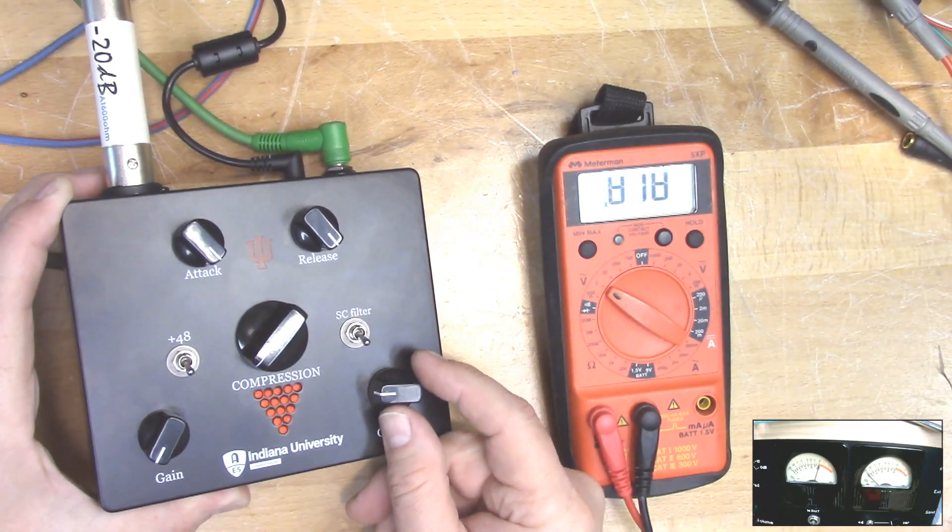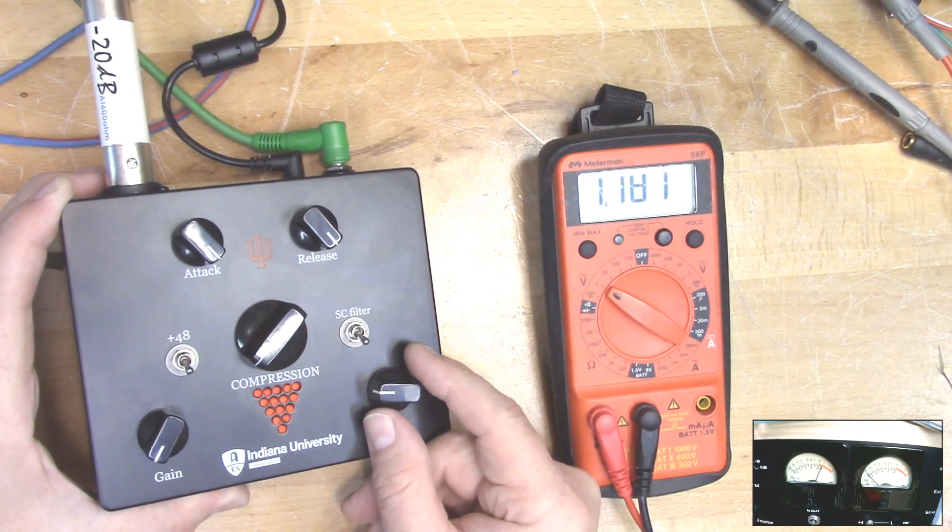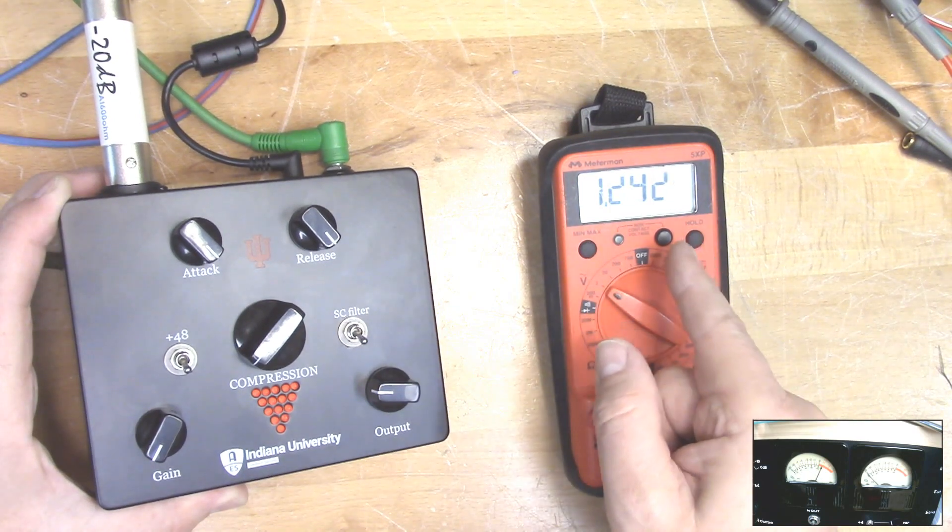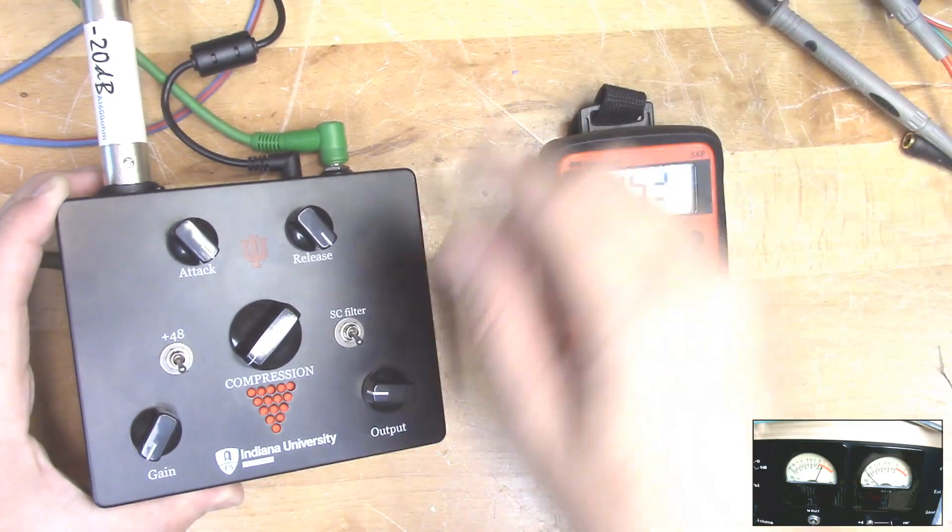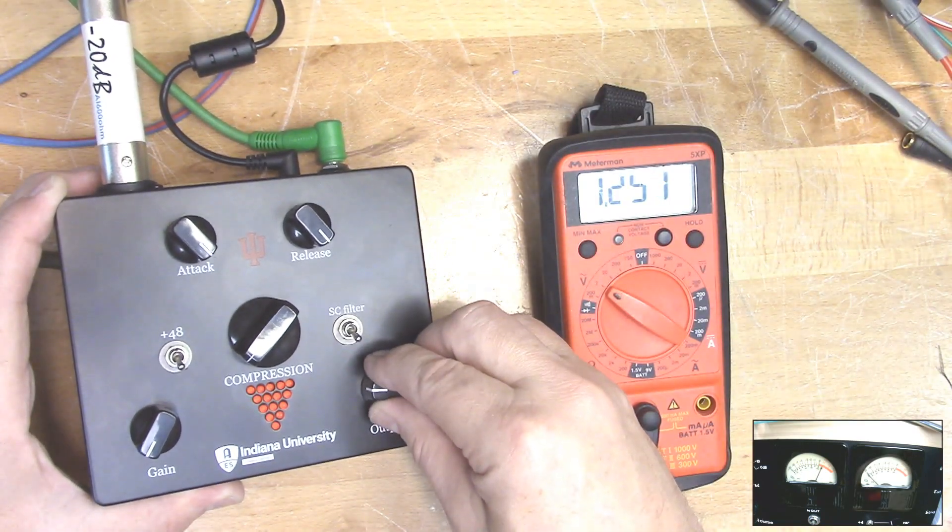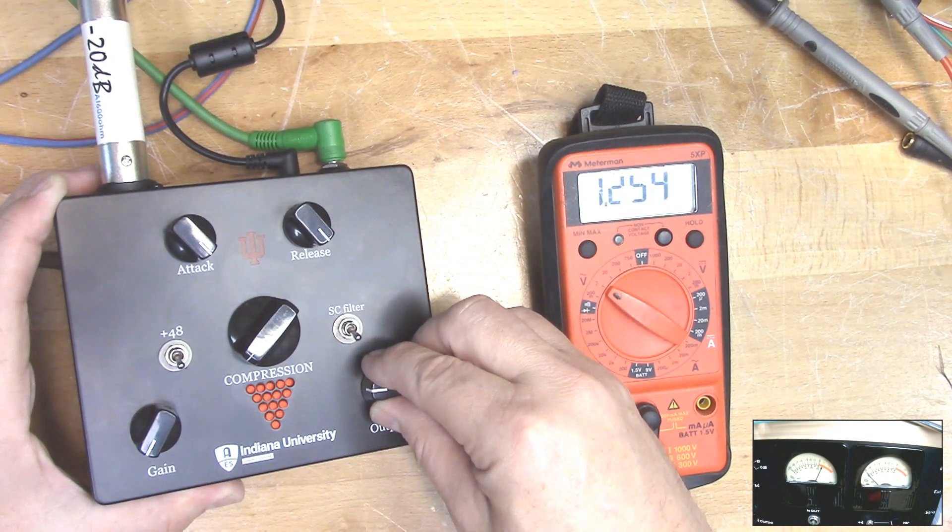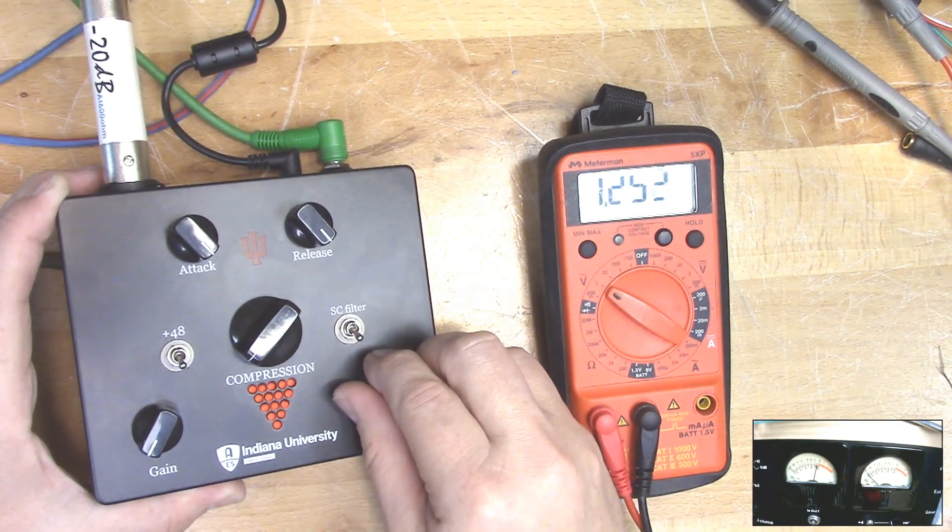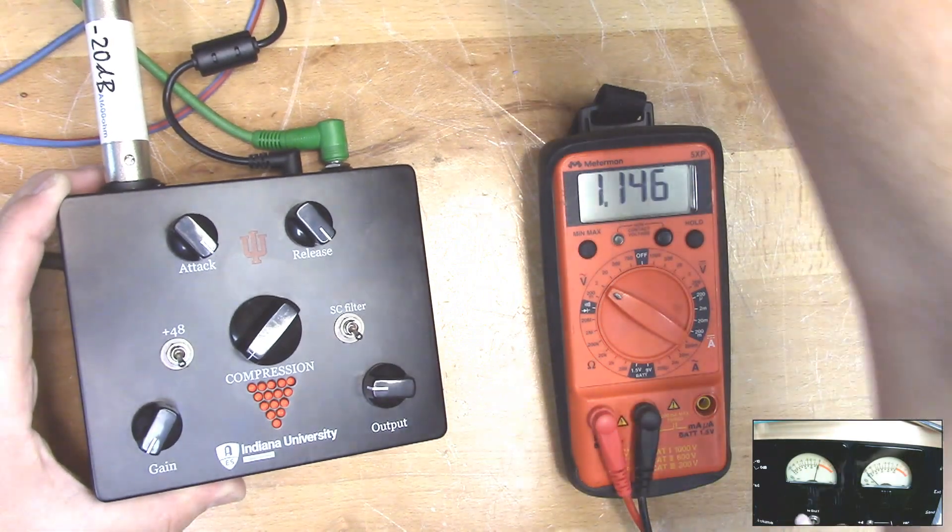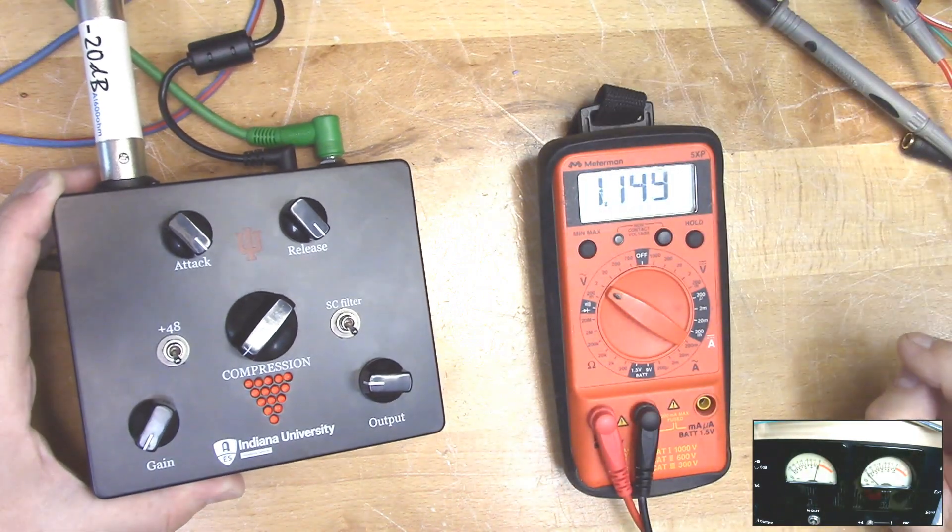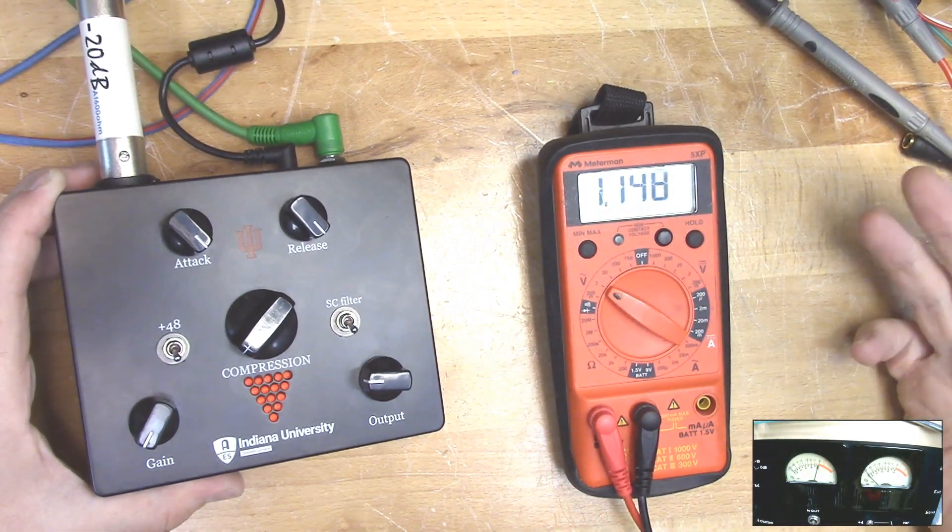So now I'm just going to adjust my output to get 1.23. So that's good. I also have a set of VU meters, mechanical VU meters that I use, that makes it a lot easier.